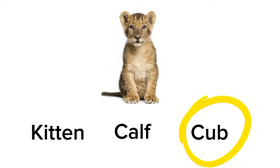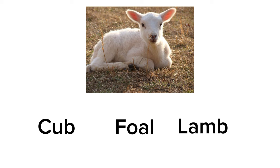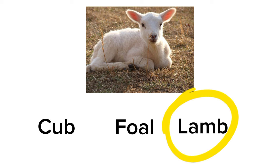Now move towards the next example. It is baby sheep. What is its name? Is its name Cub? No. Is its name Foal? No. Is its name Lamb? Yes! Good job! Baby sheep is called Lamb.